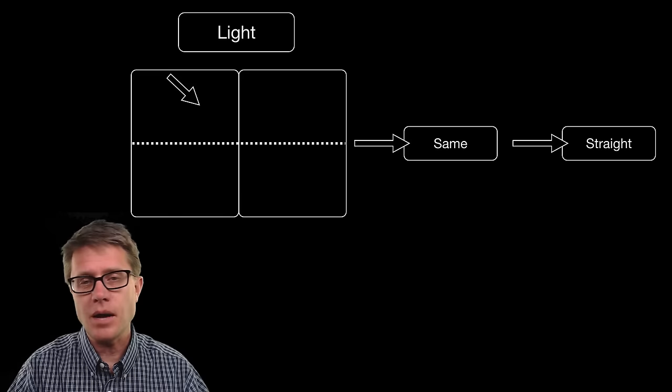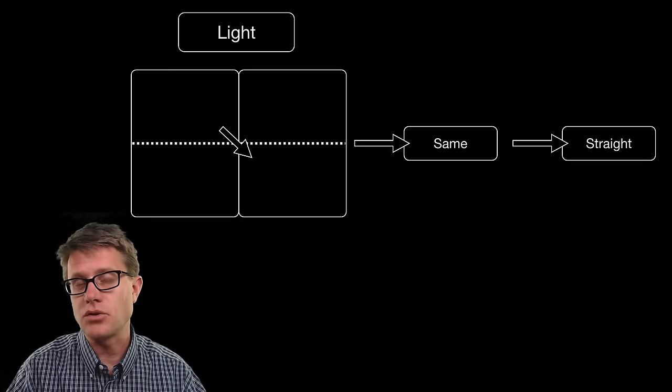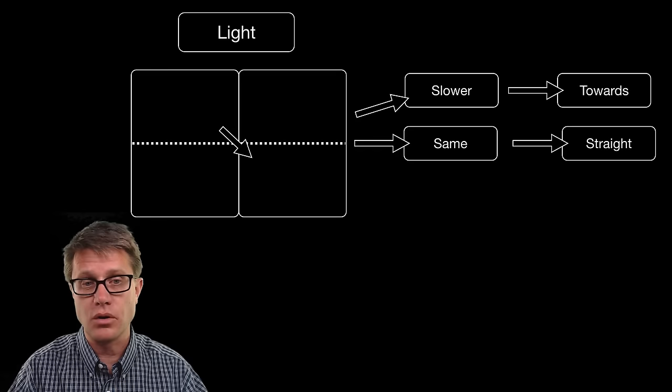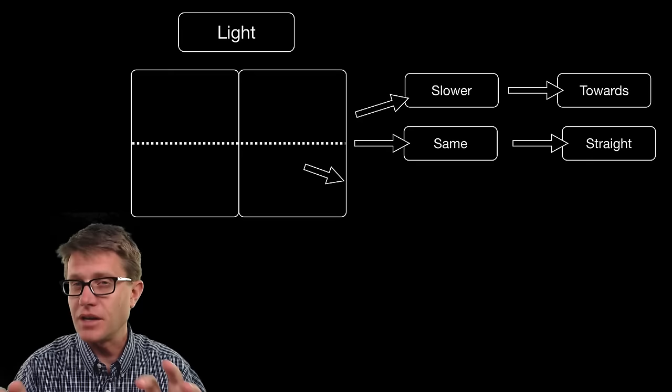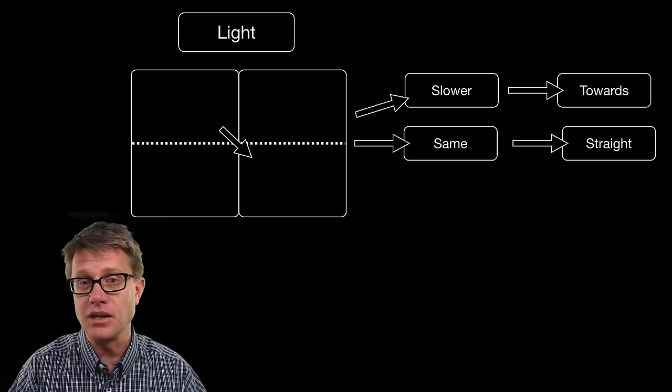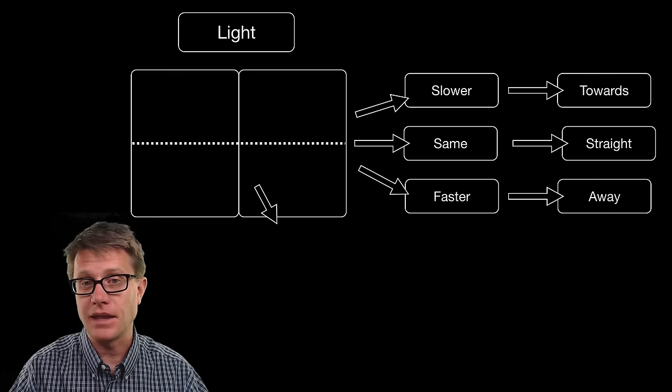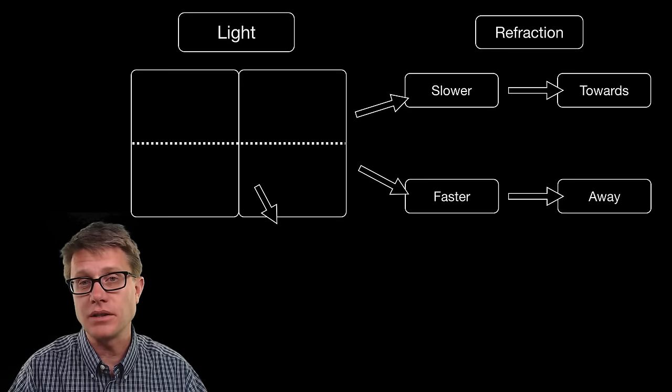If light goes from one medium to another where it travels slower, it will actually bend towards the normal — towards that perpendicular line. What happens if it comes in and it is moving into a faster medium? It will actually bend away from that normal. That is called refraction — we see the bending of the light. We can actually quantify that using something called Snell's law.